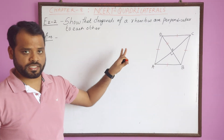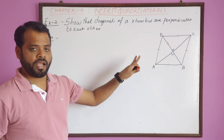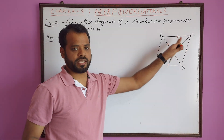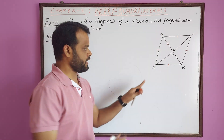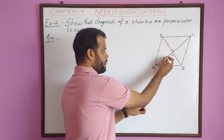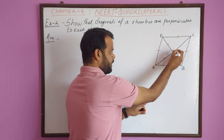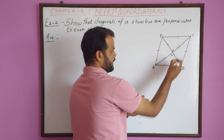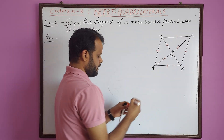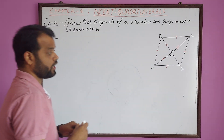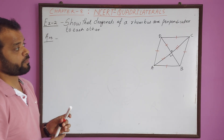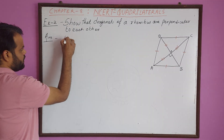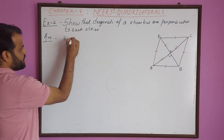OA will be equal to OC because we know that a rhombus is a parallelogram, and in a parallelogram the diagonals bisect each other. So this side equals this side, because diagonals of a parallelogram bisect each other.